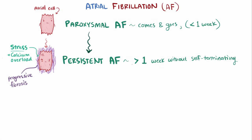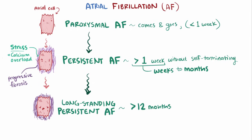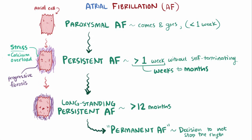Persistent AF episodes can last for quite a long time — weeks to months. When AF episodes last beyond 12 months, it's known as long-standing persistent AF. And permanent AF is what it's called when the patient and the clinician make a joint decision to not attempt to stop the rhythm.